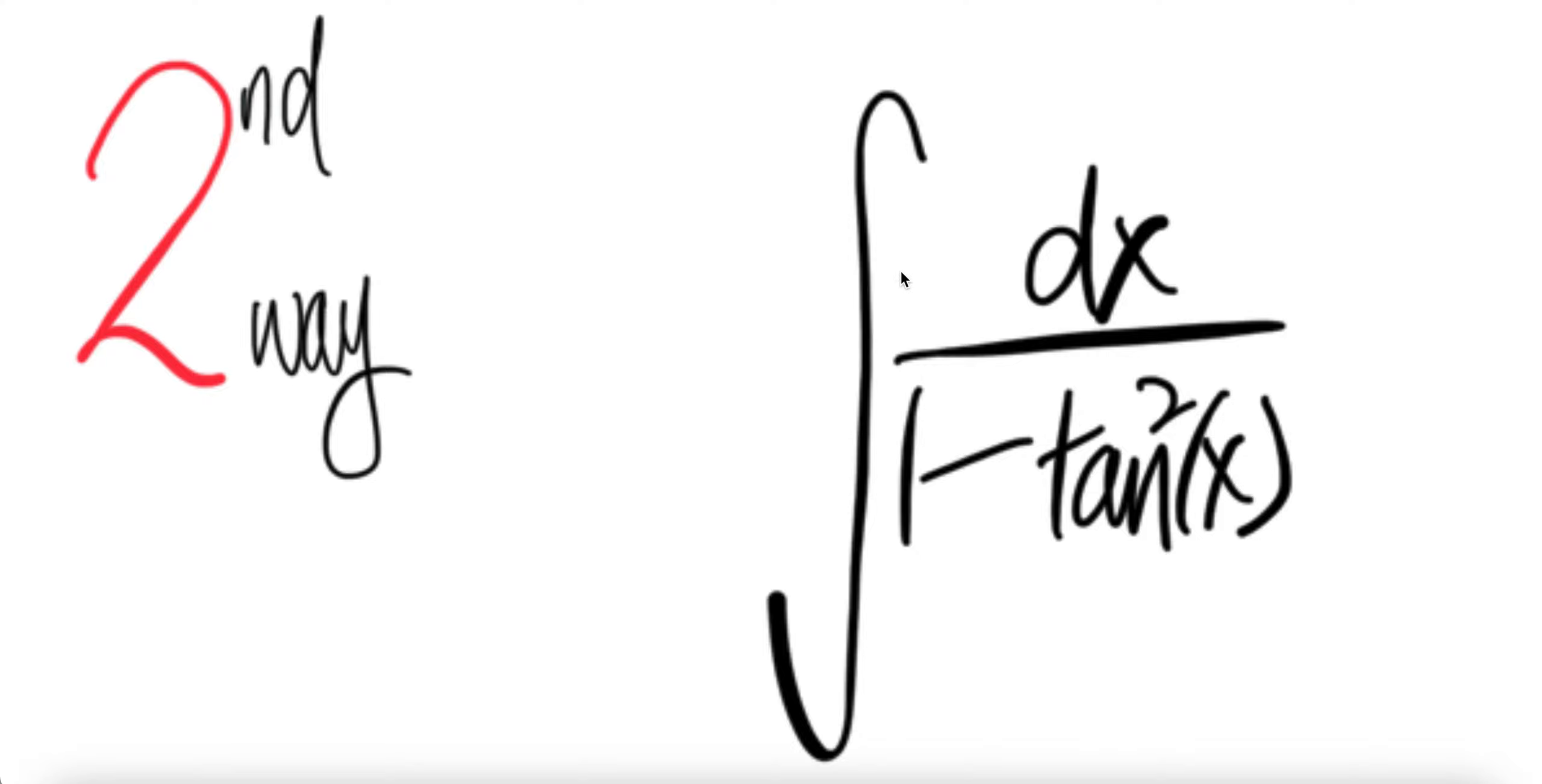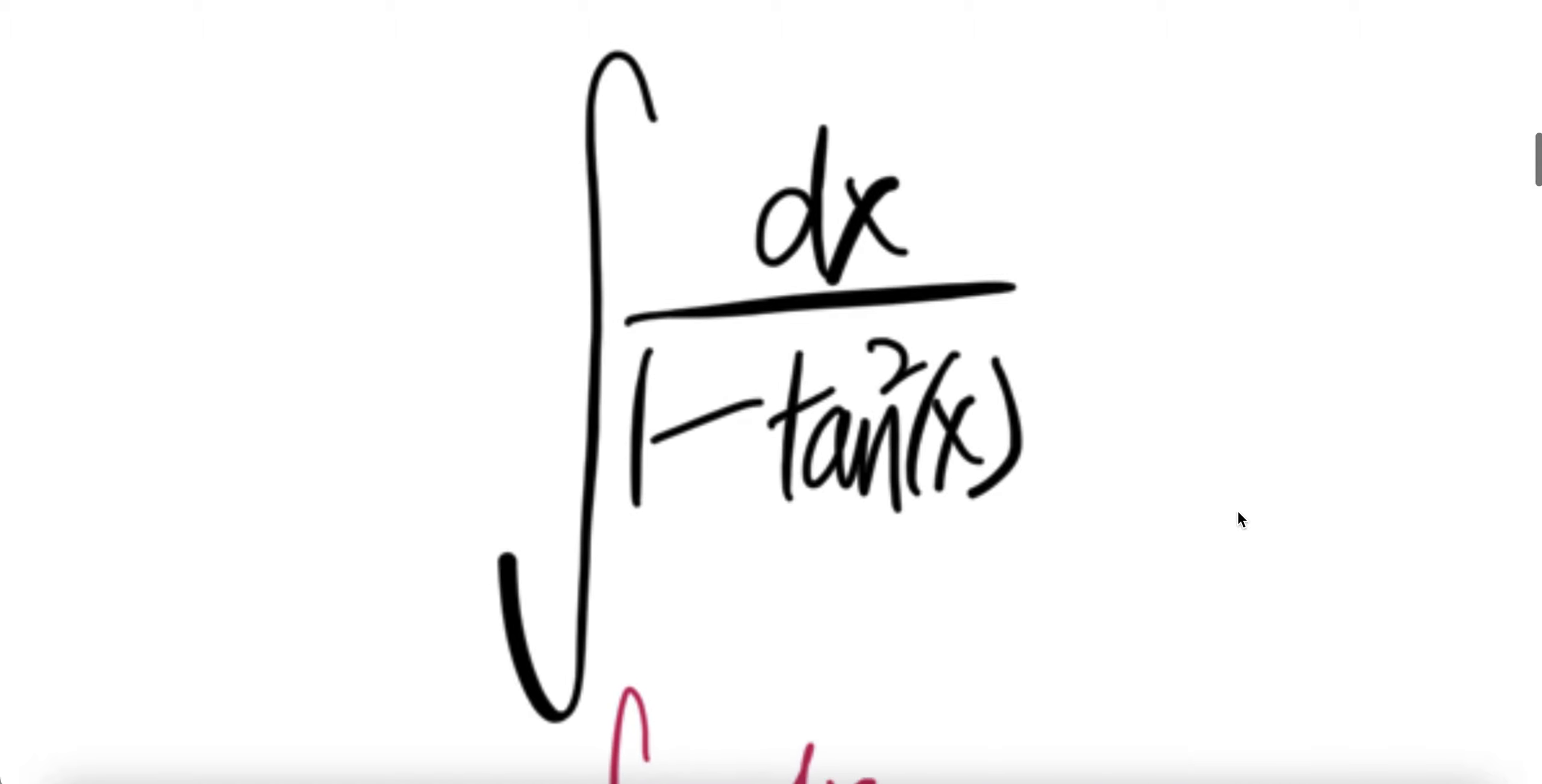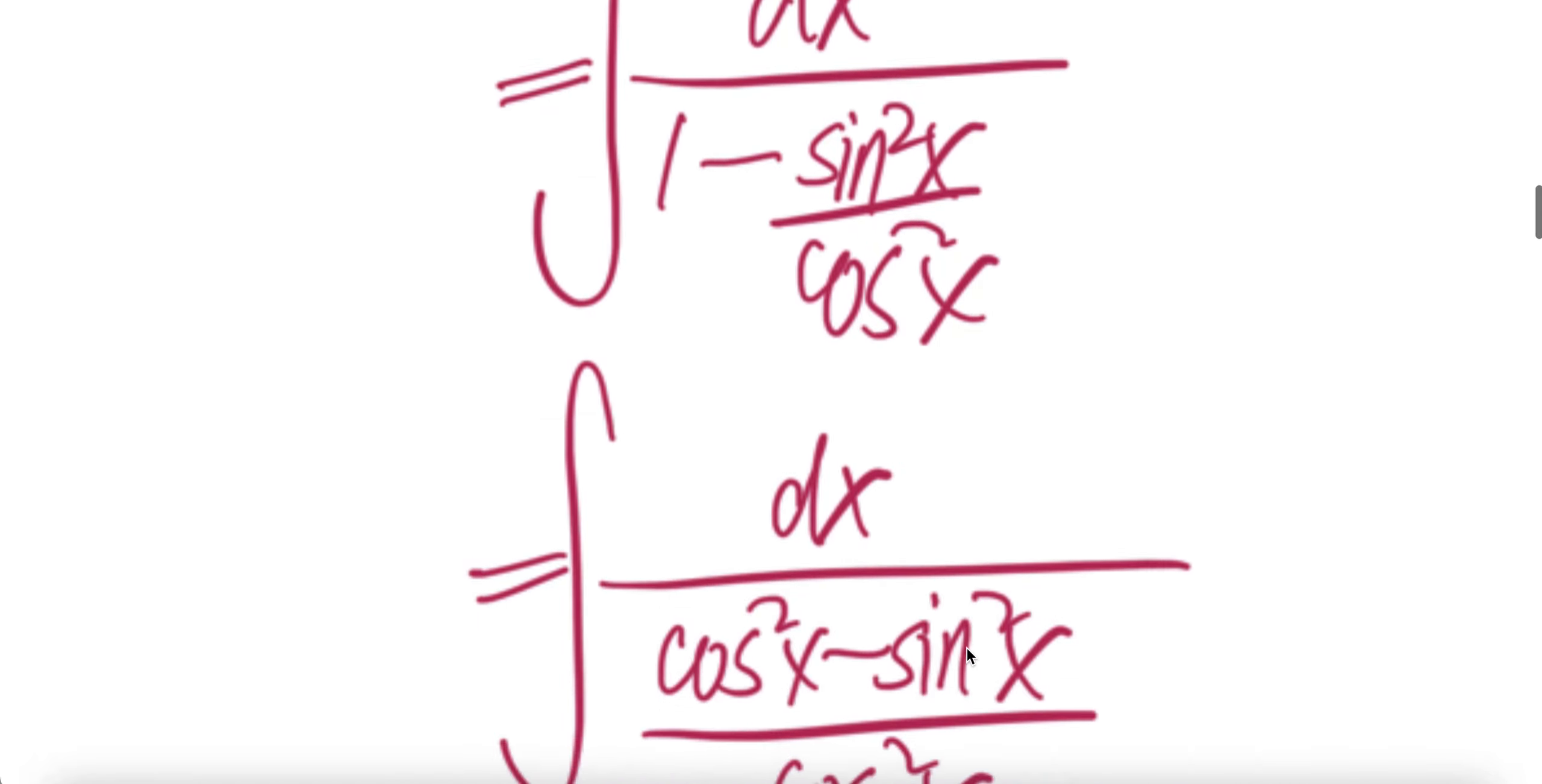Let us look at a second way to get the integral of 1 over 1 minus tan squared x. We can write tan squared x as sine squared x over cosine squared x.